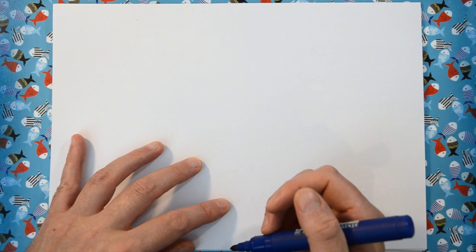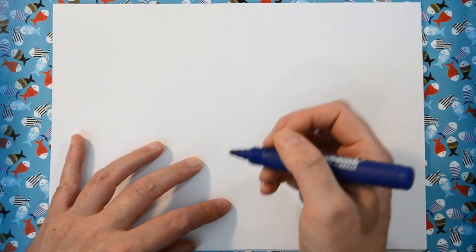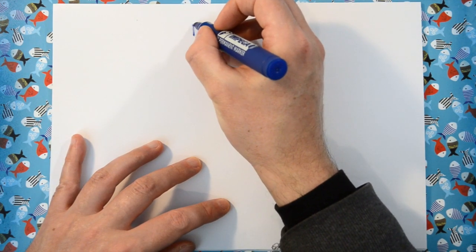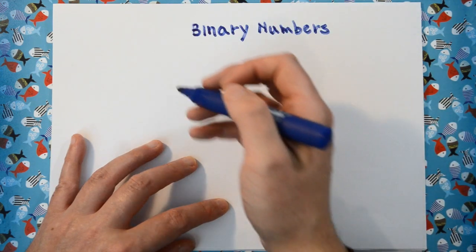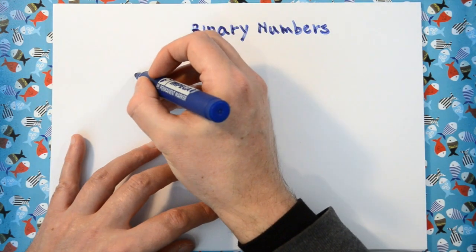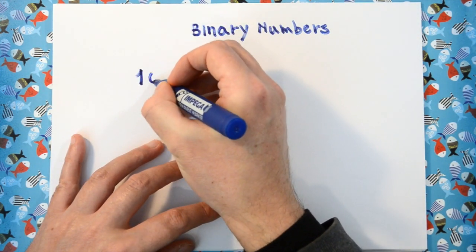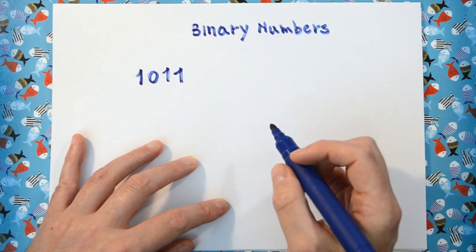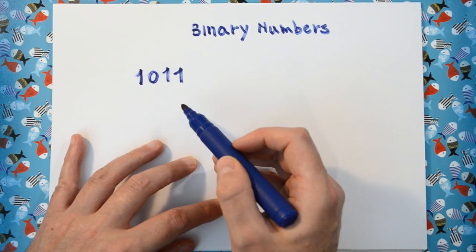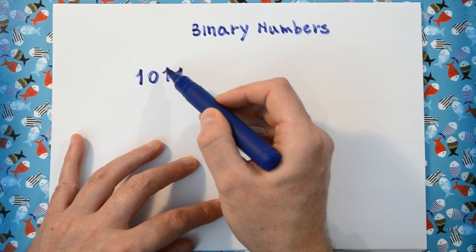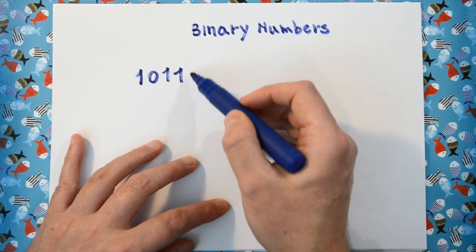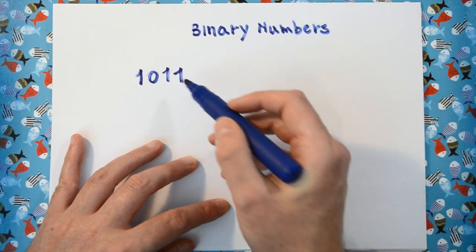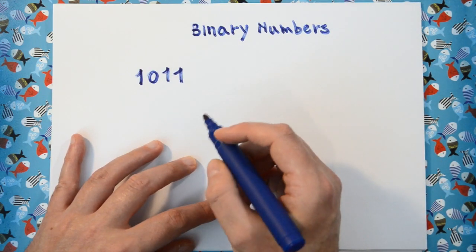I'll show you with an example how to read binary numbers. Let's for example take the binary number 1011. There's four bits, meaning there's four packets of information. Let's start off with the first one being the one to the right.